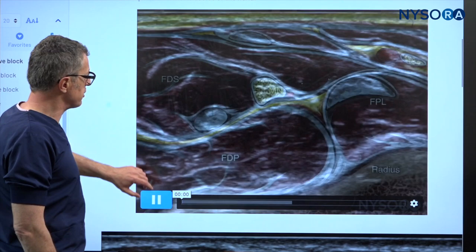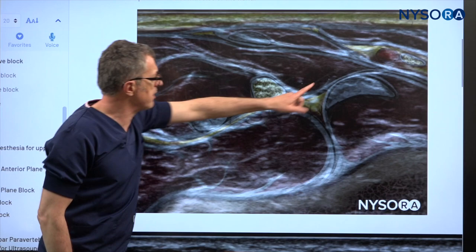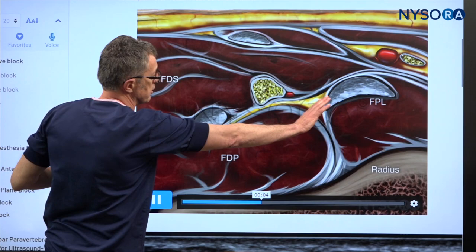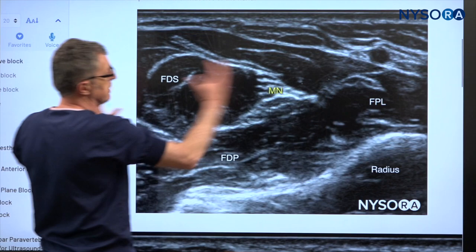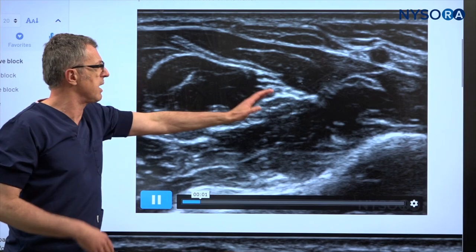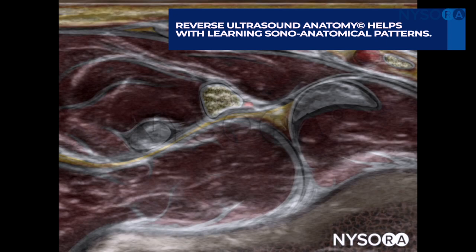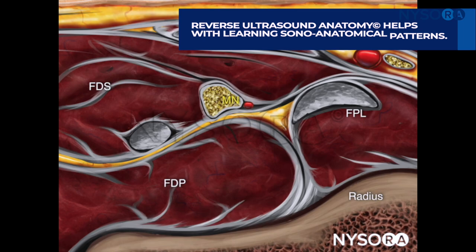This is what these animations actually do. We start from the ultrasound image where we can see the median nerve and the fascia sheets around it, then we take the viewer into the illustration so we know what is what on this particular image. Then we take the viewer back to the ultrasound image. The idea is that you want to really memorize these patterns so that when you place the probe on a patient, you're expecting a certain sono-anatomical pattern, which helps you instantaneously recognize it.